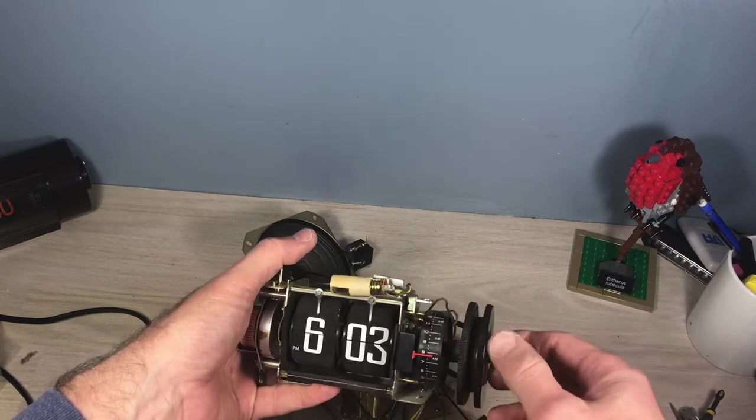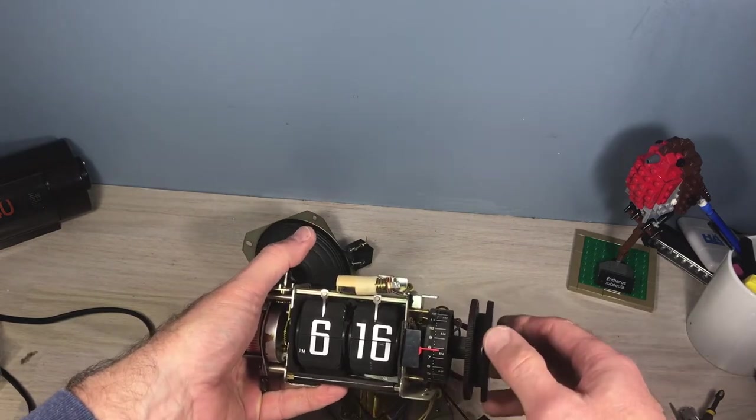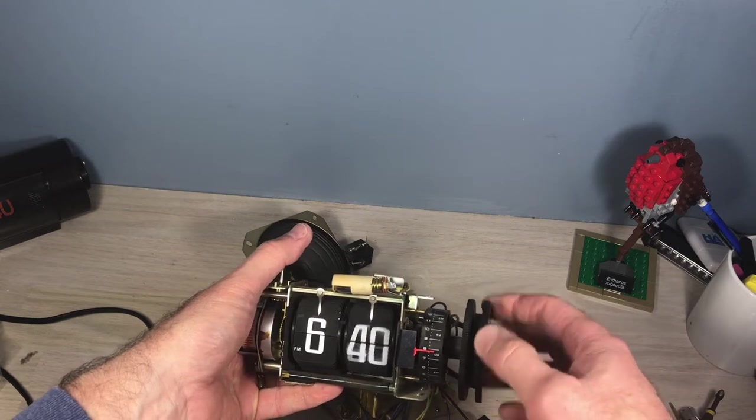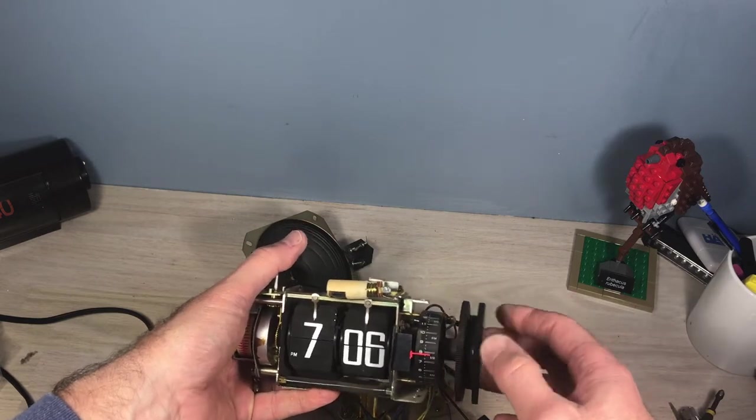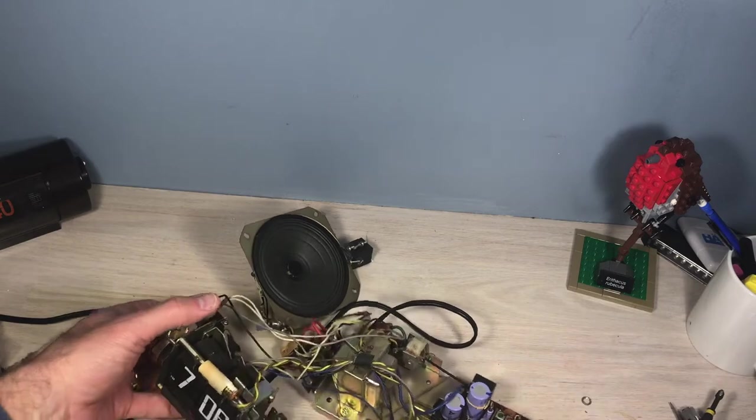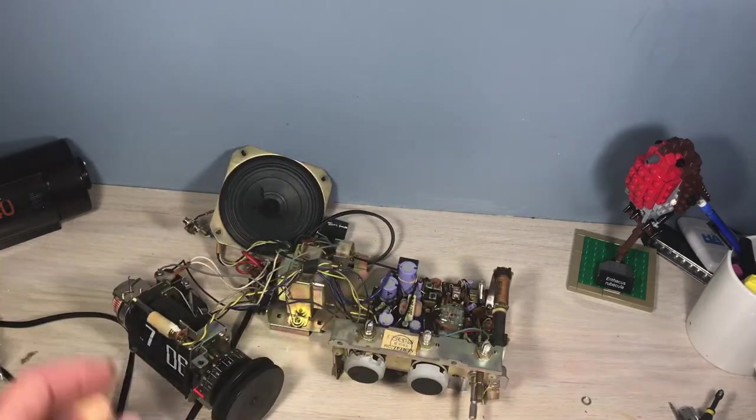Now this is the mechanism here and it's filthy, it really is. So I'm going to clean that up and the numbers too are dirty. So I'm going to clean each individual number, believe it or not, with a Q-tip and distilled water. So we'll get this clock looking pretty good here.